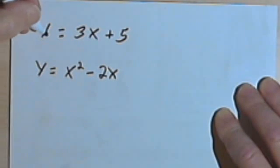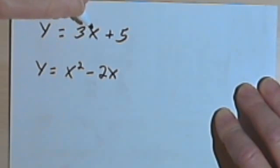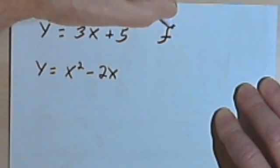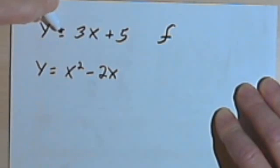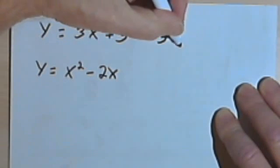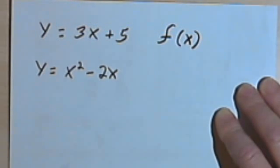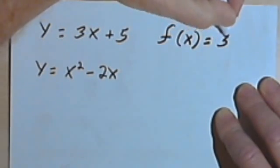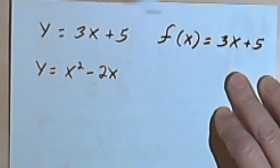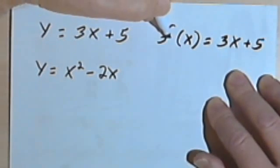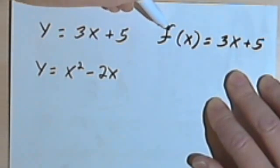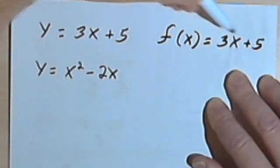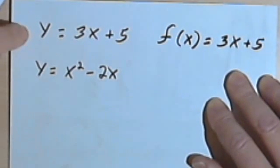What we're going to do is we're going to give names to each of the equations. And the names are going to be letters, so the first equation, y equals 3x plus 5, I'm going to use an f for that one. And what I'm going to write is f, and in parentheses I'm going to put the x, and then equals whatever that y used to equal, 3x plus 5. So if y equals 3x plus 5, and f of x equals 3x plus 5, then y must equal f of x.